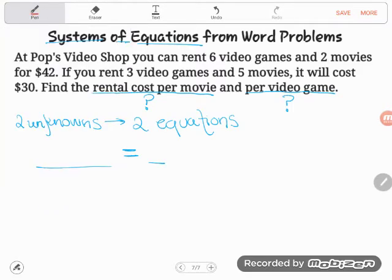So let's take a look through this word problem, looking for some relationships of equality. Look at this first thing you notice. It says at Pop's Video Shop, you can rent six video games and two movies for $42. Right there, that is the basis of a relationship. I see that if I do something, it's going to cost me a certain amount. It talks about the total cost of renting. But before we do, we need some variables. You guys know what I mean when I say variables? Those are letters.